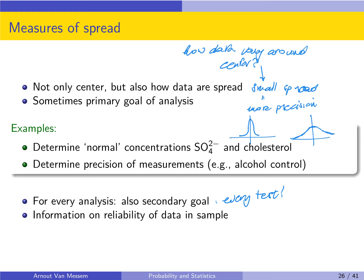In the second example, if we want to determine the precision of measurements, then it is a primary goal. For example, if you have an alcohol control — in Belgium you cannot have more than 5 promil of alcohol in your blood — if you have a test for this and the test gives you a value of 6 promil, then the result of the test will depend on the accuracy of the measurement. In the case where the test gives you 6 promil plus or minus 3 promil, you have a very inaccurate measurement. This result means that your actual test result can be anywhere between 3 promil and 9 promil, so even if you measure 5 promil it can actually be 3 or 4 promil because of the inaccuracy of the test.